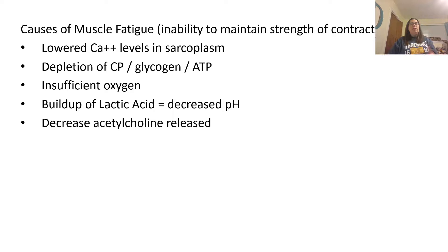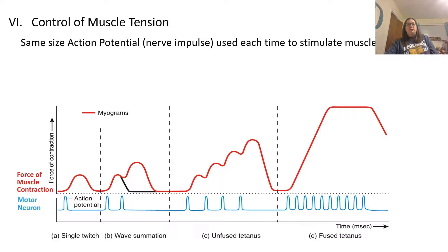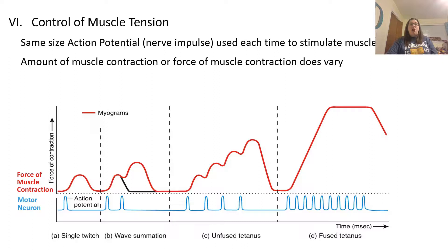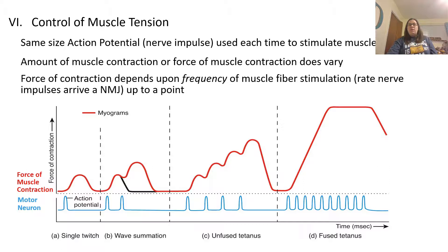Let's talk about the control of muscle tension. The same size action potential is used each time to stimulate the muscle fiber — the motor neuron sends the same signal with no deviation in height. The only difference is how fast or how many times the signal is sent. The amount of muscle contraction force does vary, and the force of contraction depends on the frequency of muscle fiber stimulation — it's the rate of nerve impulses, not the actual height of the signal, that changes how the muscle contracts.